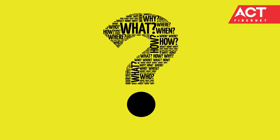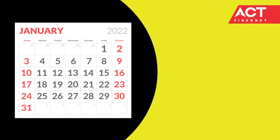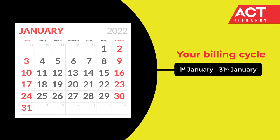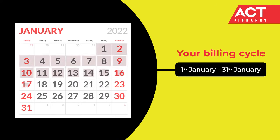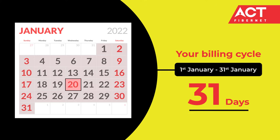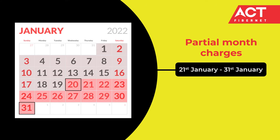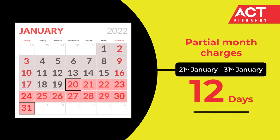So how is this calculated? Let us say your billing cycle is from the first of the month to the end of the month, and you subscribe for our services on 20th January. You'll now incur partial month charges till the end of the month, that is 31st of January. This comes up to 12 days.